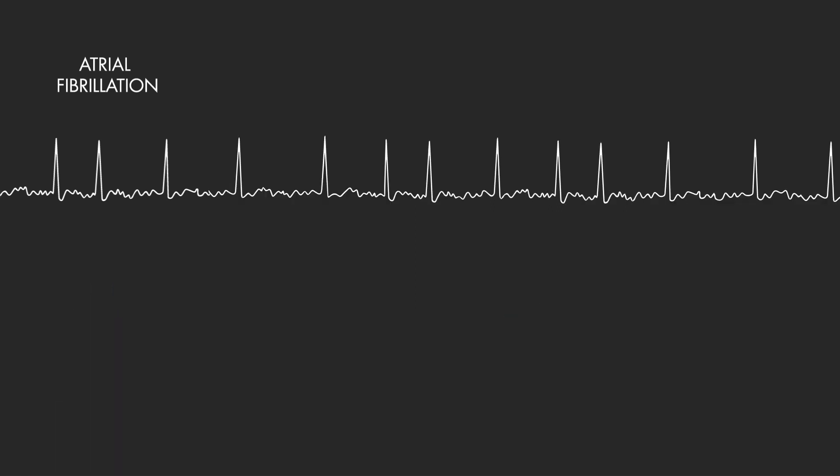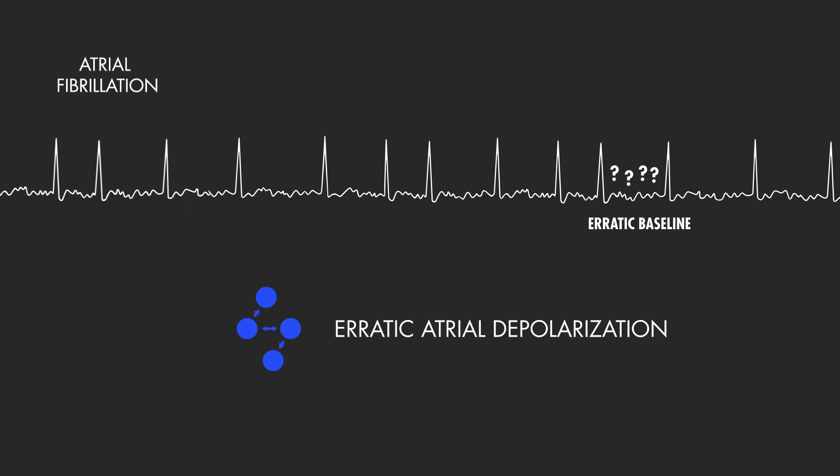In atrial fibrillation, we have this haphazard baseline, where it's difficult to tell one true P-wave from another. This is the result of erratic atrial depolarization occurring at multiple different atrial ectopic sites almost simultaneously, which translates to this irregularly irregular pattern.